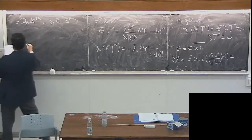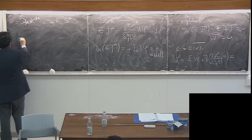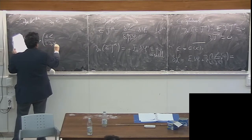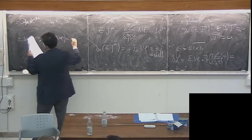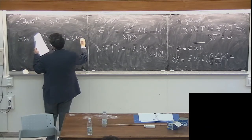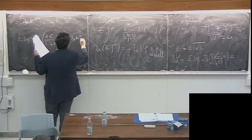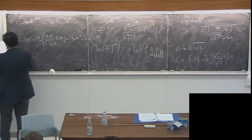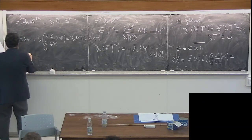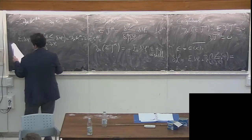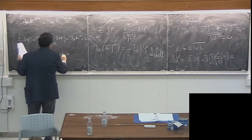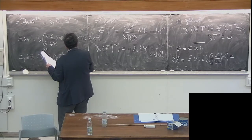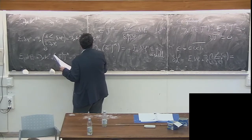What we end up with is: e_i delta phi_i plus d_mu (delta L / delta d_mu phi_i) delta phi_i equals d_mu kappa_mu plus d_mu epsilon bar s_mu. Now using the definition of epsilon j_mu, I write this as e_i delta phi_i plus d_mu k_mu plus d_mu epsilon bar j_mu, because j_mu is conserved, so it equals d_mu kappa_mu plus d_mu epsilon bar s_mu.